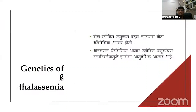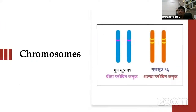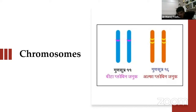In genetics, whenever these chromosomes are damaged, they have point mutations, missense mutations — various mutations which can lead to the decrease or absence of globin chains. Chromosome number 11 has the beta globin chain, and chromosome number 16 has the alpha globin. So depending upon what mutation they have and on which chromosome, it can be alpha or beta thalassemia.